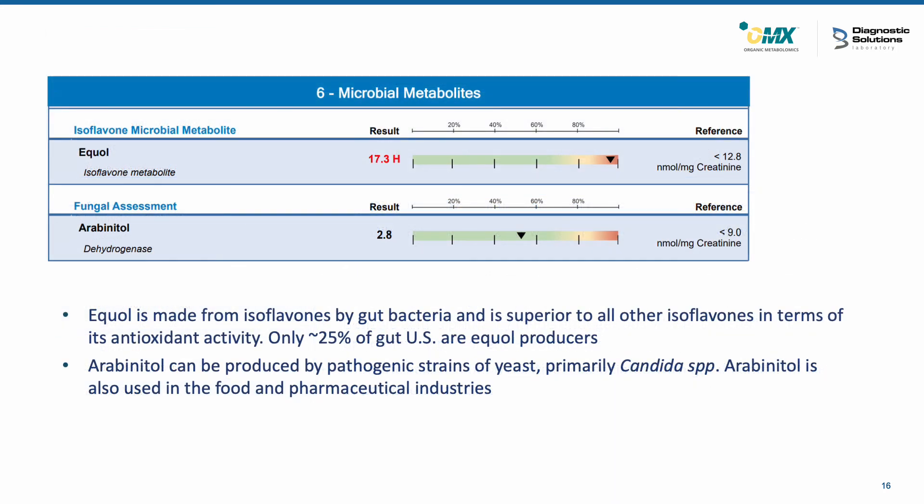The last part of the microbial section includes equol, which is made by bacterial action on isoflavones, and arabinitol, which can be produced from Candida.